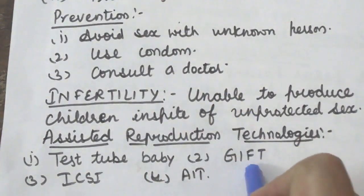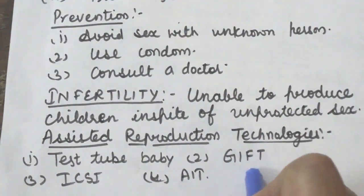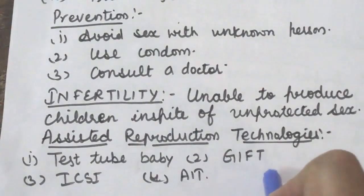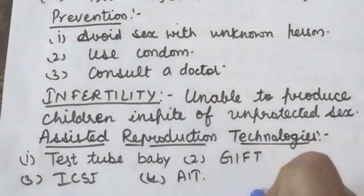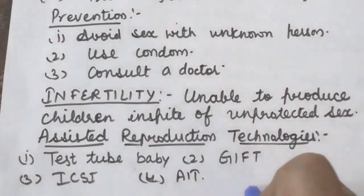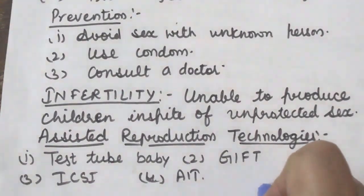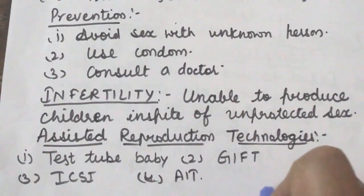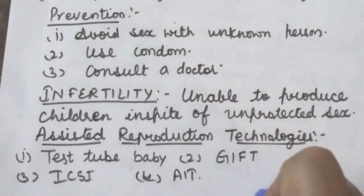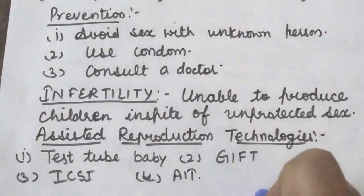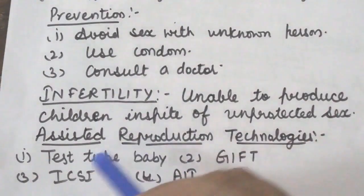Next is GIFT, or Gamete Intra-Fallopian Transfer. This method is used in females who cannot produce ova but can provide a suitable environment for fertilization and further development of the embryo in the oviduct. In such cases, ovum from a donor is surgically removed and introduced into the fallopian tube of such females, who then accept sperm from their husband during copulation by natural methods.